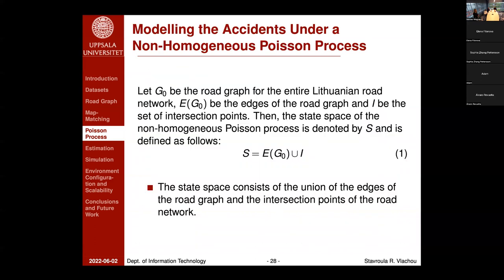Now we give some formalism. Let g0 be the road graph for the entire Lithuanian road network, E(g0) be the edges of the graph, and I be the set of intersection points. We define the state space to be the union of these two sets — in other words, a state is either an edge of the road graph or an intersection point.